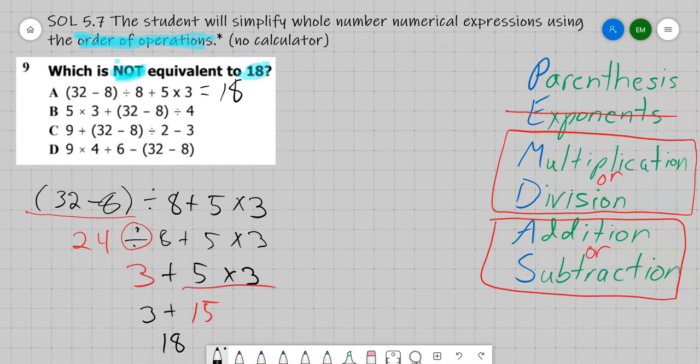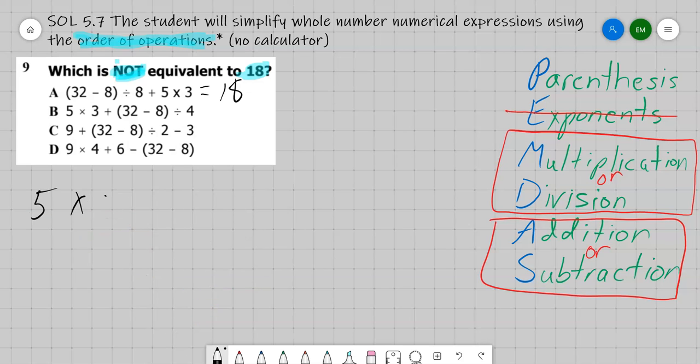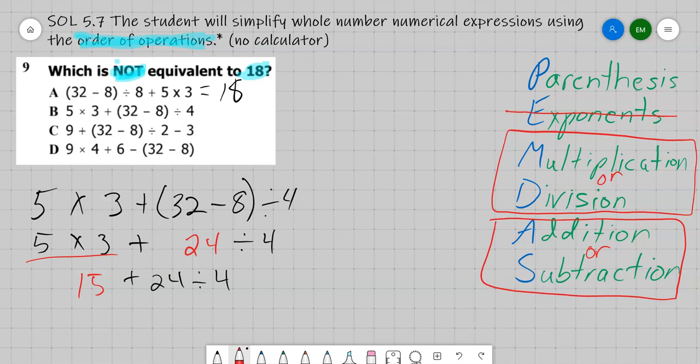So let's keep going and let's work on B. So B was 5 times 3 plus parentheses 32 minus 8 close parentheses divided by 4. Alright, so let's start looking at our first step. Do I see anything in parentheses? Yes I do. 32 minus 8. I'm going to bring down the rest of my problem. Look for more parentheses. Nope, let's go down. Multiplication or division. I see some multiplication on the left. 5 times 3 is 15. Bring down the rest of the problem. Look for some more multiplication or division. Yep, there it is. So 24 divided by 4. Bring down the rest of the problem. And 15 plus 6 is 21.